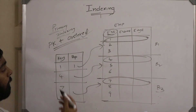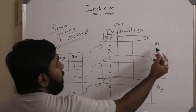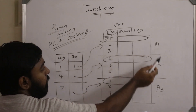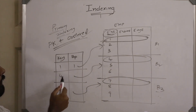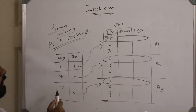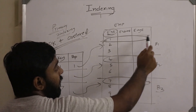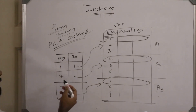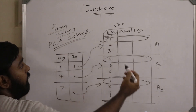We can conclude that the number of records in the index file is equal to the number of blocks in the data file. Here we have three blocks, so we have three records in the index. We have constructed an index on the primary key with an ordered data file.